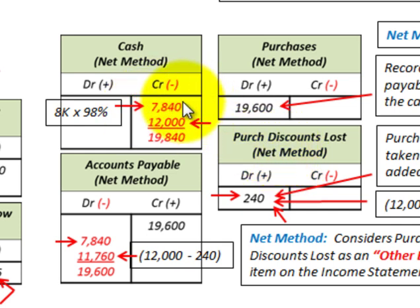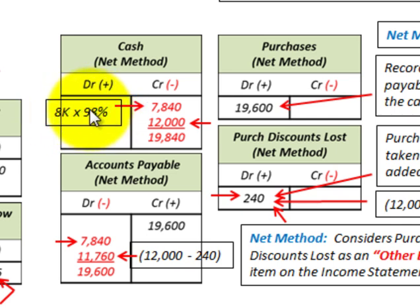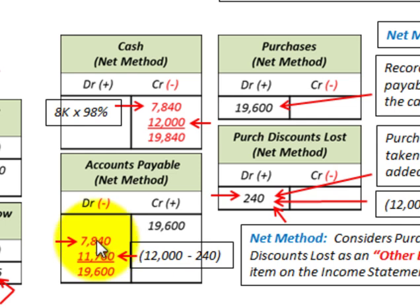For the $8,000 payment under the net method, we credit cash for $7,840, which is $8,000 times 98%. We debit accounts payable for $7,840 as well. Whatever the discount percentage is, we subtract it from 100% — here 98% — and apply that to the payment amount.